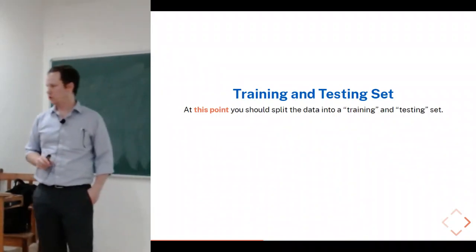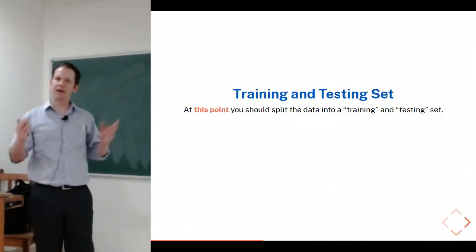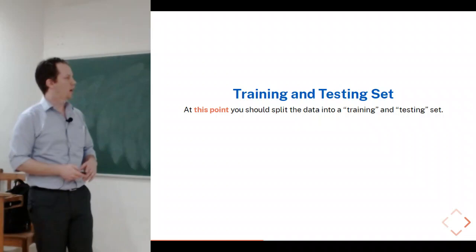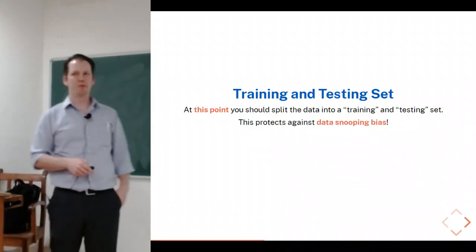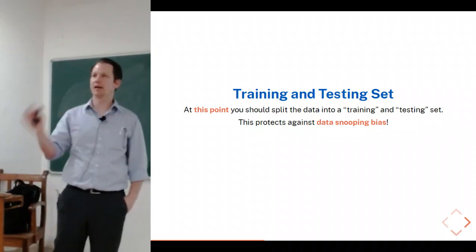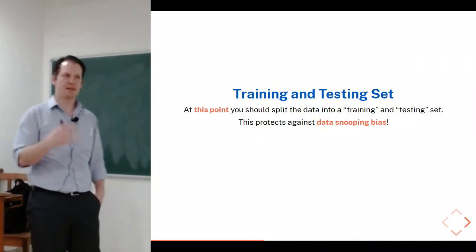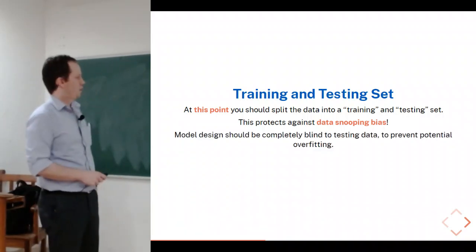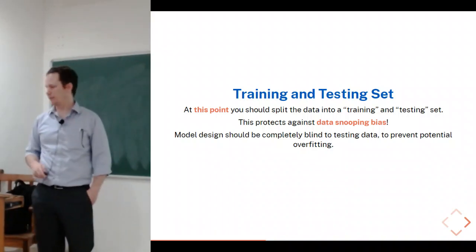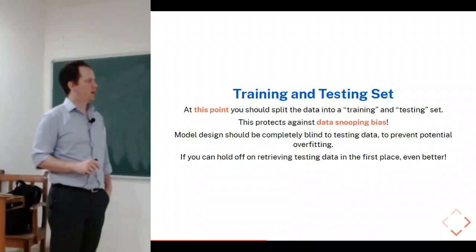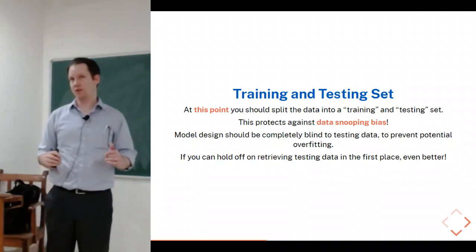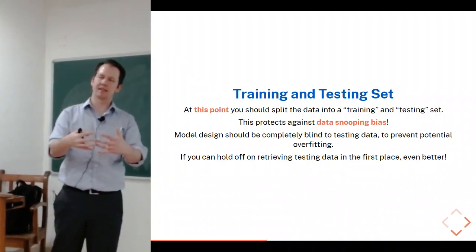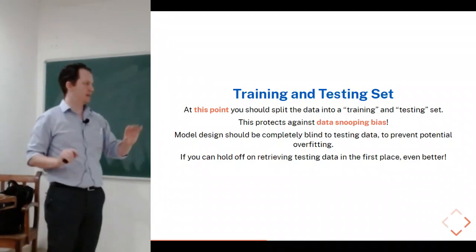At this point it's a good idea to split your dataset into a training set and a testing set. The idea is to make your model more robust and avoid overfitting, which we'll discuss shortly. This also addresses data snooping bias — when you look at data, you get ideas about how to build your model, so you want to make sure you only look at training data. The testing set should be treated as something you've never seen before. Your model design should be completely blind to testing data — you can even split training and testing before downloading, ensuring you never look at testing images beforehand.